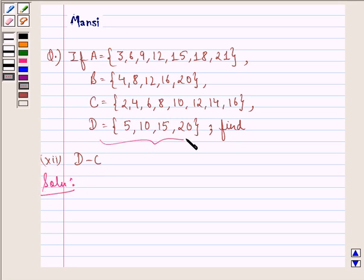The set D is given by this and C is given here. Now when we subtract the set C from D, we get the set 5, 15, 20.